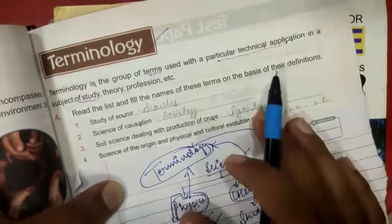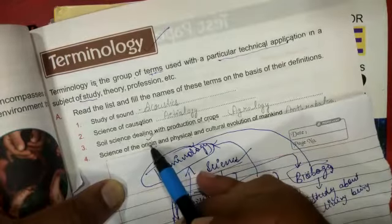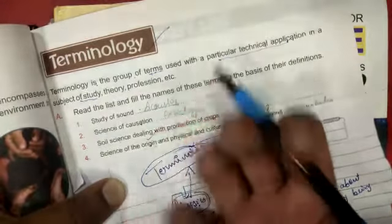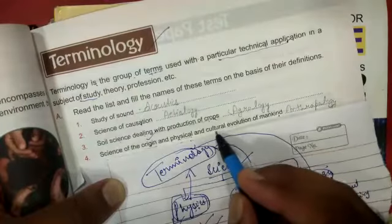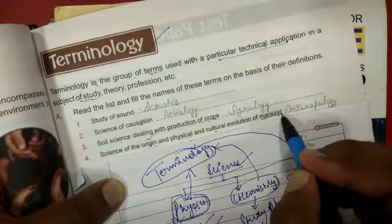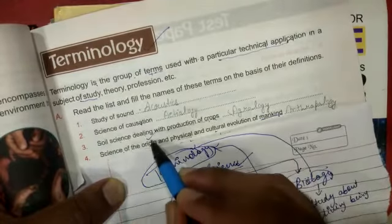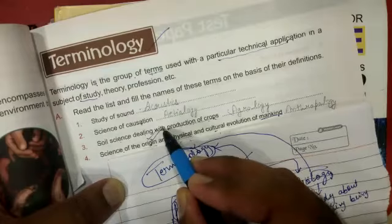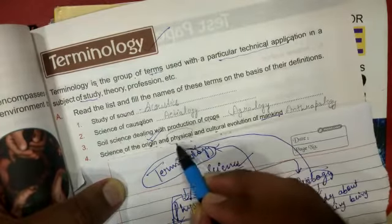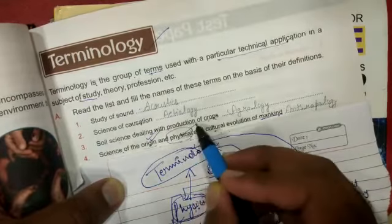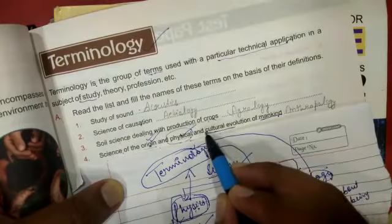The next one, science of the origin, from where something originated, and physical and cultural evolution of mankind. This is that science in which it is written from where man has originated, how it has attained its physical appearance, what changes come.